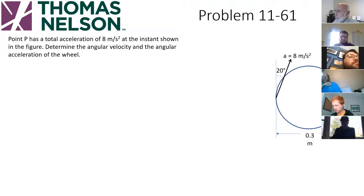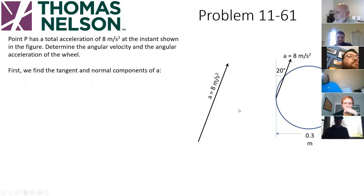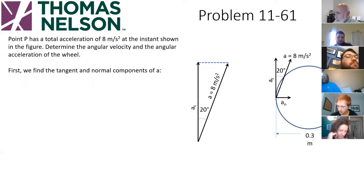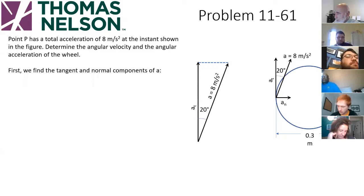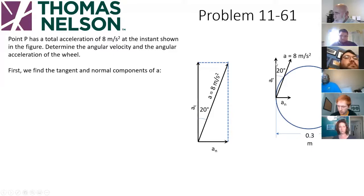The idea here is that we're given the total acceleration and need to figure out the angular velocity and angular acceleration — it's in reverse. First, we find the tangential and normal components of A. We know the total acceleration vector A has a tangential component and a normal component toward the center. The sum of those has to equal A. We use trigonometry to calculate AN and AT from the given angle.